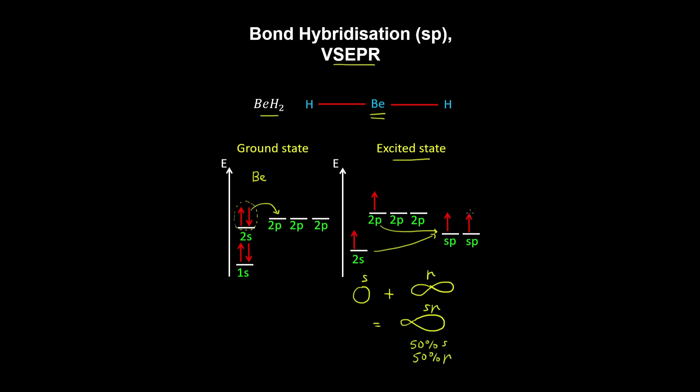So these orbitals accept an electron from hydrogen. If we draw our orbitals around this beryllium atom, each have one electron in them, and these overlap with the s orbitals of hydrogen, where the valence electrons are.